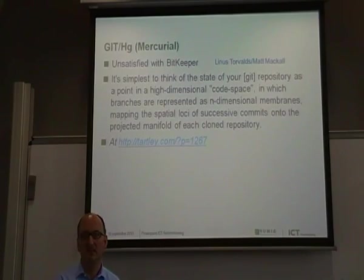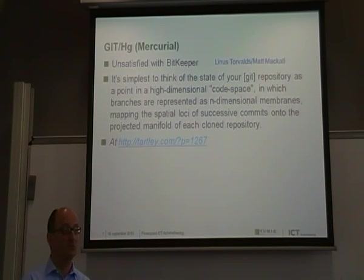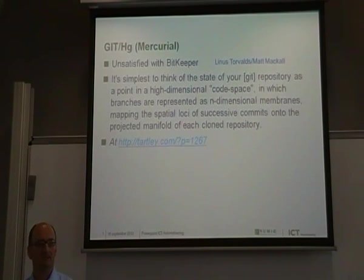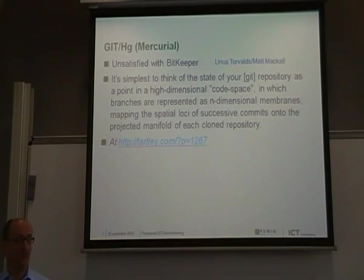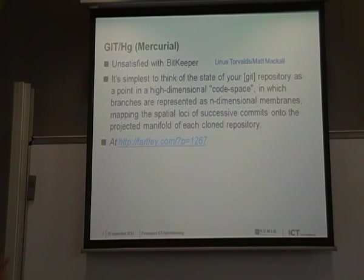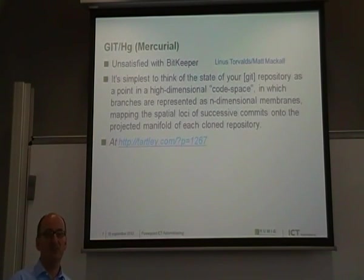They both are rewritten — or thrown away — from BitKeeper. BitKeeper was a commercial system that was very popular in the open source world. It was used by the Linux developers. Linus Torvalds liked it very much because of the way it worked, but it was commercial. Open source projects could use it for free if they fulfilled some conditions, and one of those conditions was that it was forbidden to reverse engineer anything related to version control.